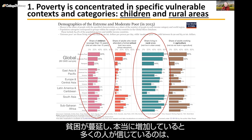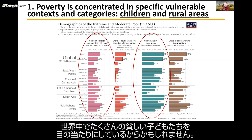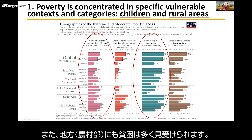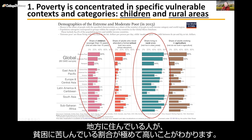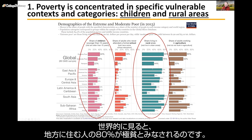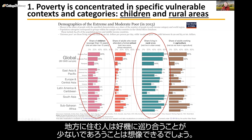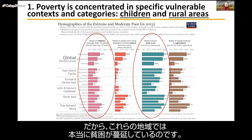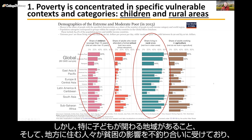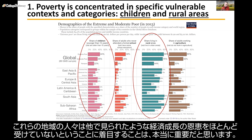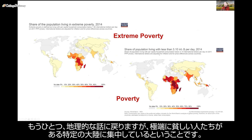This may explain why many people still believe poverty is rampant and on the rise — because they see a lot of poor children across the globe. There is also a lot of poverty in rural areas. Looking at the green bars in the graphic, the share of people living in rural areas who are in poverty is extremely high — globally, 80% of people in rural areas are considered extremely poor. The opportunities available to people in rural areas seem to be very limited, and they have not benefited from the economic growth seen elsewhere.